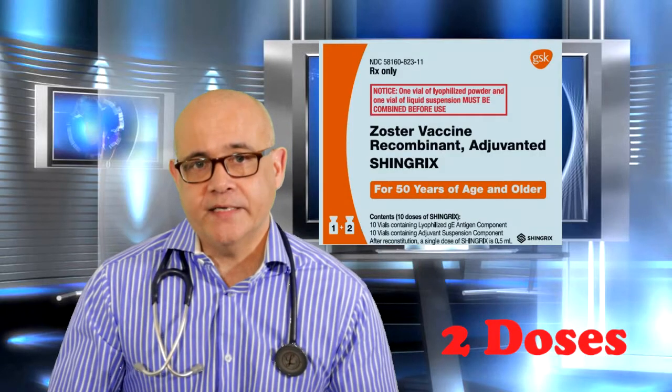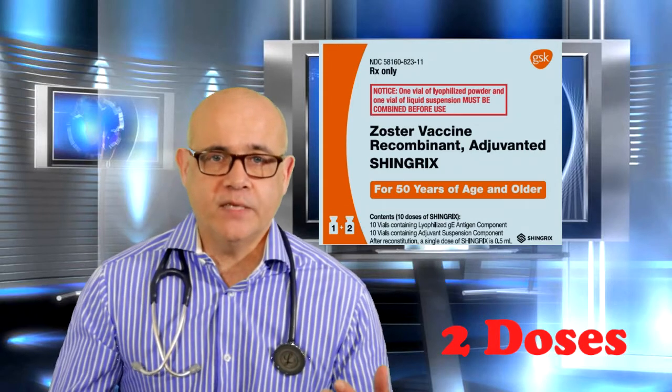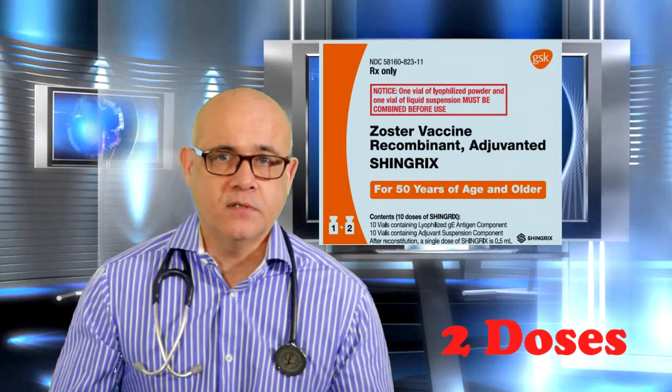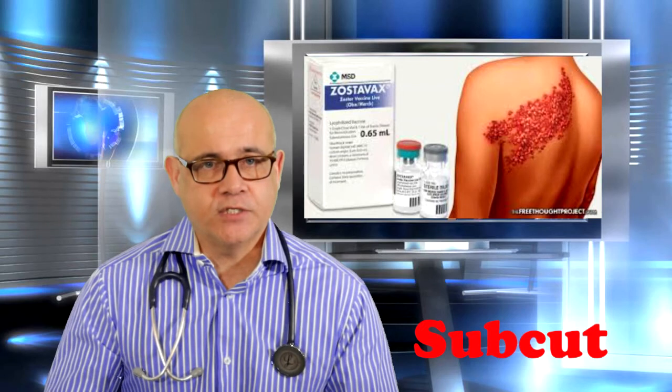Vaccine administration: Shingrix requires two doses administered intramuscularly. The second dose should be administered two to six months after the first. Zostavax is a one-time subcutaneous injection.